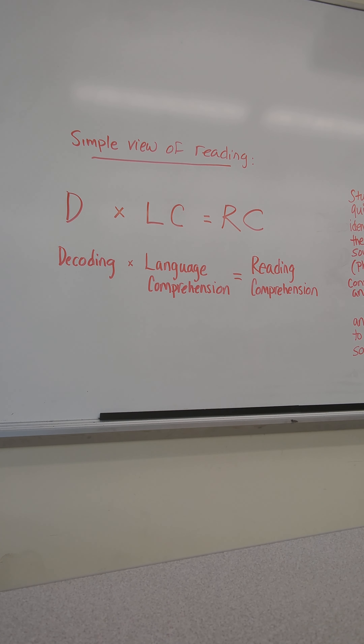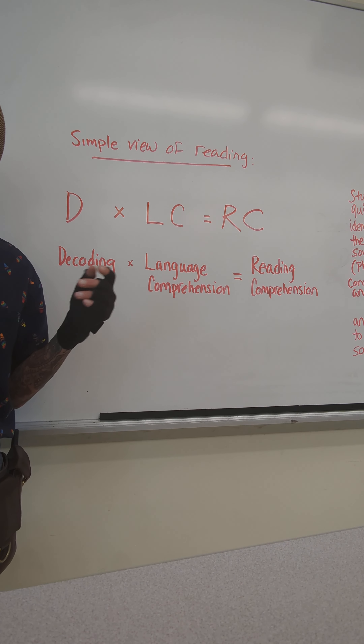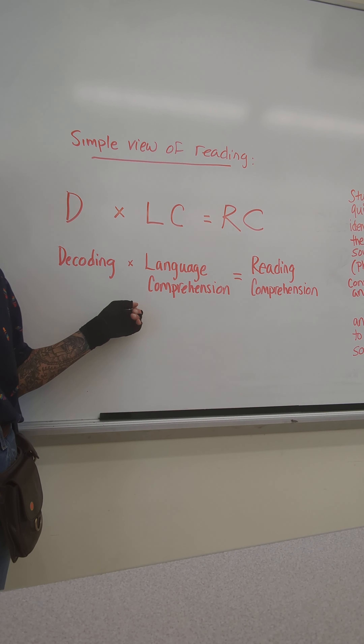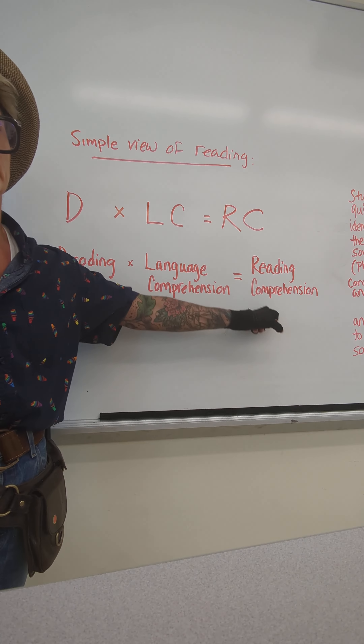We're going to call this the final video of the year, and I'm going to take us back to where we began — this equation. It's called the Simple View of Reading. It states that decoding times language comprehension equals reading comprehension. The multiplication is important because if one is slightly off, it affects the other and the overall product. You can be very strong in your conversational language, but if you cannot quickly and seamlessly decode words on a page or phonologically hear them, your reading comprehension will certainly be affected.